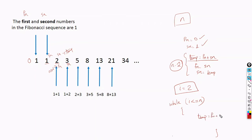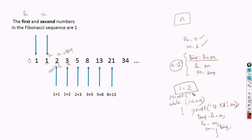Inside the loop: temp = Fn + Sn is the first step, then new Fn = Sn, then Sn = temp. One more requirement is that each time Sn has to be printed, so you add a print statement. To put a space you can use slash t, so printf slash t percentage d Sn. The first number has to be printed only once, so that is given outside the loop as printf slash t percentage d Fn.